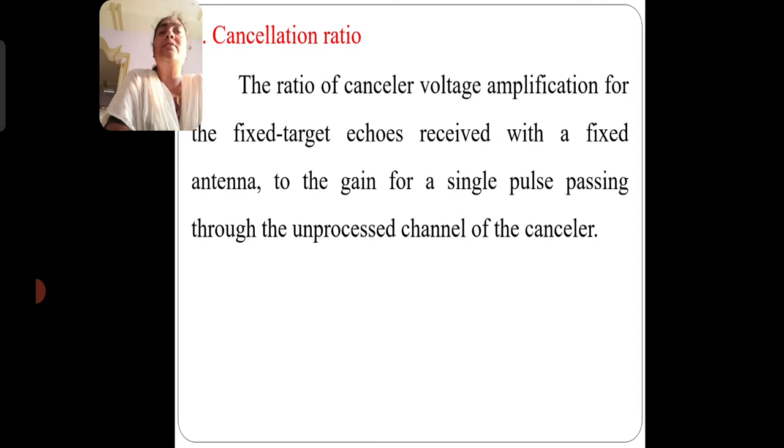And last one is the cancellation ratio. So the cancellation ratio is the ratio of the canceller voltage amplification for the fixed target echoes received with the fixed antenna to gain the simple passes.